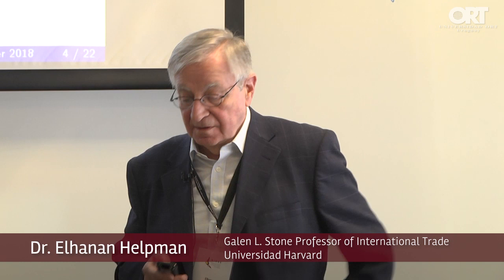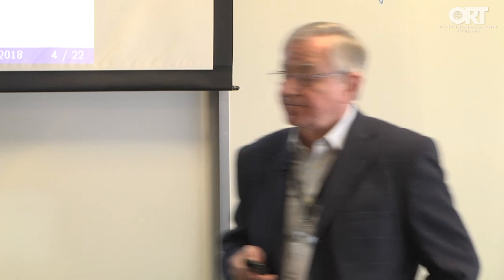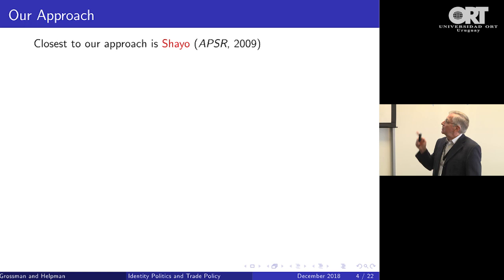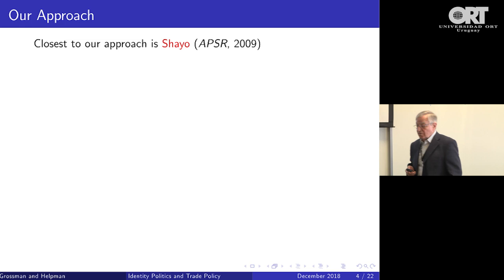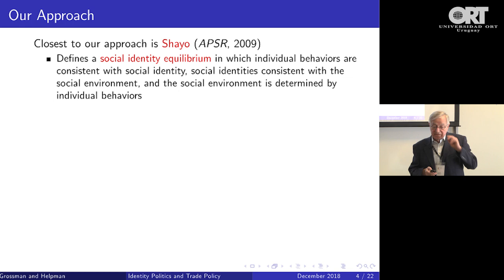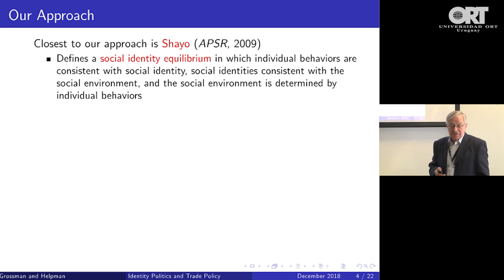Social identity theory was introduced into economics about 18 years ago by Akerlof and Kranton, whose mission was to analyze how people change their behavior once they identify with certain groups. Our paper is closest in spirit to a paper published by Moses Shayo in the American Political Science Review, where he defined a social identity equilibrium in which individual behaviors are consistent with social identity, and social identities are consistent with the economic and social environment.